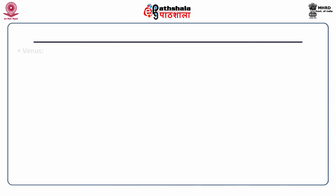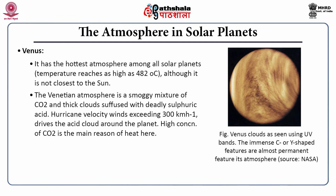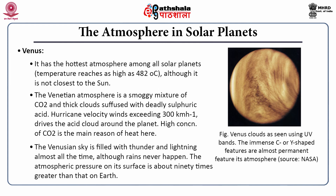The next planet is Venus. It is the hottest planet — temperatures as high as 482 degrees centigrade have been recorded in its atmosphere. Although Venus is not the nearest to the sun, its atmosphere is so hot because it is a smoky mixture of carbon dioxide and thick clouds suffused with deadly sulfuric acid. Hurricane-velocity winds exceeding 300 kilometers per hour drive the acid clouds around the planet. The Venusian sky is filled with thunder and lightning almost all the time, although rain never happens there.